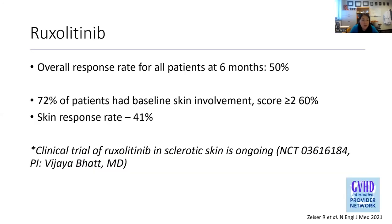Ruxolitinib is a JAK1/2 inhibitor approved for second-line steroid-refractory chronic GVHD. The overall response rate for all patients at six months is about 50%. In the large phase three randomized controlled trial, 72% of patients at baseline had skin involvement, with an NIH score of two or greater in 60% of those patients, and the skin response rate was 41%. Notably, there is an ongoing clinical trial of ruxolitinib specifically in sclerotic skin GVHD at several institutions.